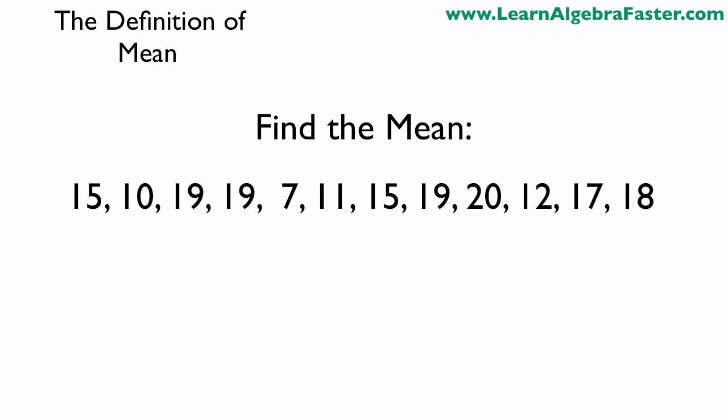As an example, let's find the mean of these points: 15, 10, 19, 19, 7, 11, 15, 19, 20, 12, 17, and 18. Now, unlike the mode, you can't just look at the data set and find the mean. And unlike the median, you don't have to put these in order. So we can take the numbers just as they are.